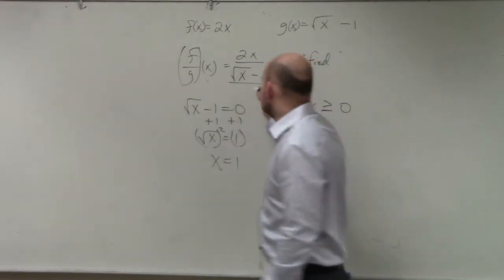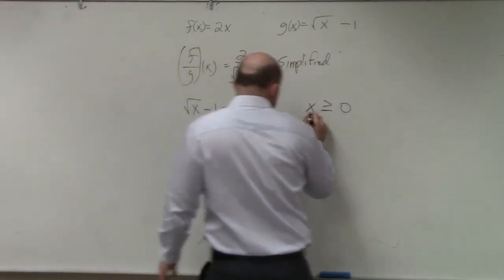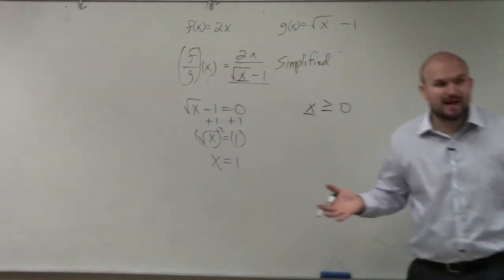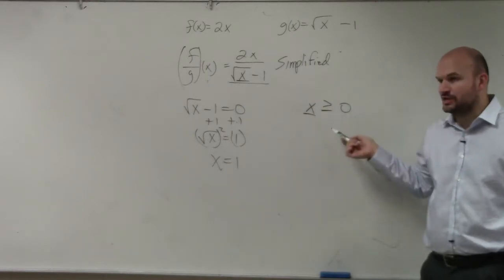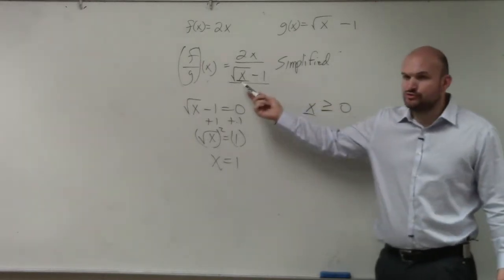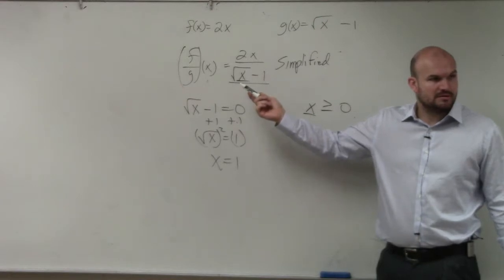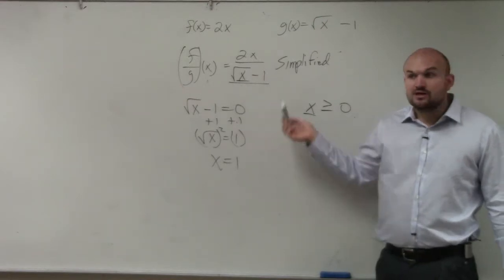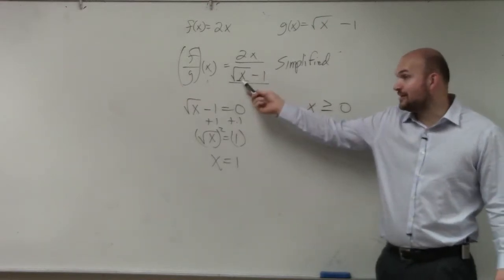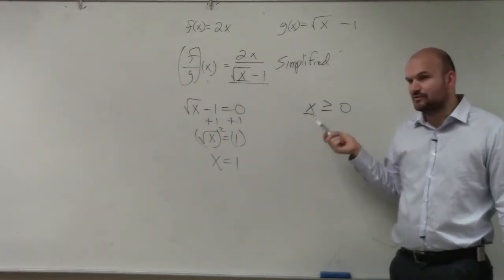The next restriction. Again, what you do is you take whatever's under your radical, which we call our radicand, and we make it greater than or equal to 0. Because think about it. Can you take the square root of any negative number? No. So all the x's that you're going to choose have to be greater than or equal to 0.